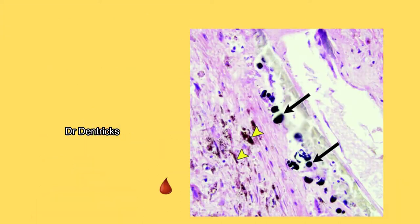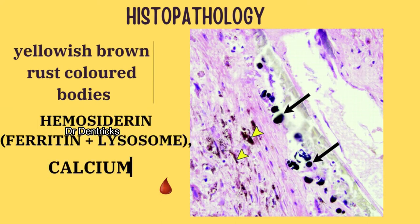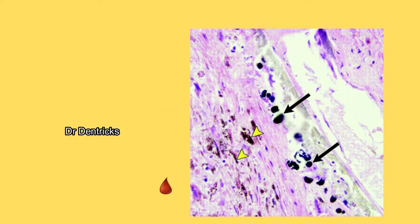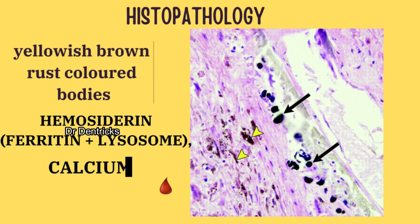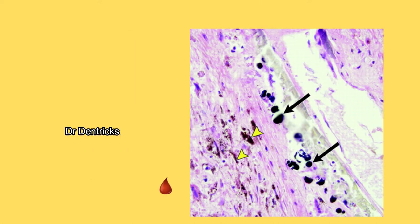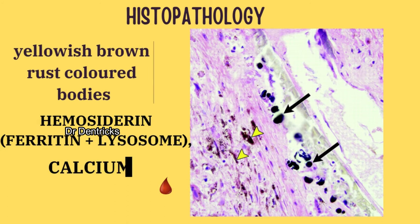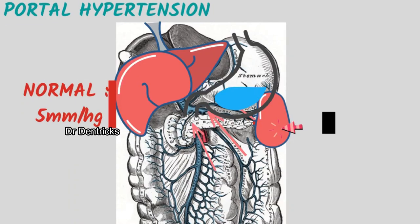These were noted in histopathology of the spleen in splenomegalic patients. In a histopathological section of the spleen, these were observed as yellowish-brown or rust-colored bodies. The brown color is due to the compound hemosiderin, which is composed of ferritin, lysosomes, and calcium.